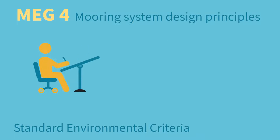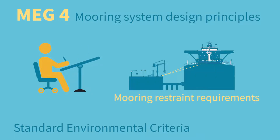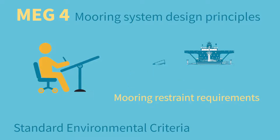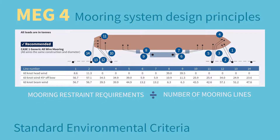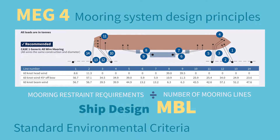At the design stage, the ship designer calculates the mooring restraint requirements needed to maintain the ship alongside the jetty, using the OCIMF standard environmental criteria. In general, the mooring restraint requirements are divided by the number of mooring lines. This calculation provides the ship designer with a ship design minimum breaking load for each mooring line, known as the ship design MBL.